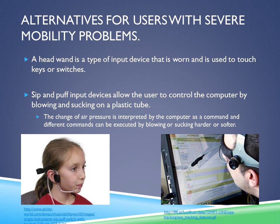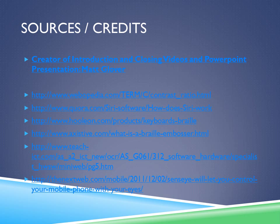Alternatives for users with severe mobility problems include a head wand, which is a type of input device that is worn and used to touch keys or switches, and a sip-and-puff input device, which allows the user to control the computer by blowing and sucking on a plastic tube. The change of air pressure is interpreted by the computer as a command, and different commands can be executed by blowing or sucking harder or softer. On the left is a picture of the sip-and-puff unit and on the right is the head wand. Sources and credits are listed, with the creator of the introduction, closing videos, and PowerPoint presentation being Matt Glover, along with links used for the information presented.